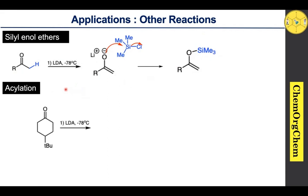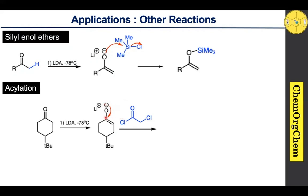Another interesting application of LDA is the acylation reaction. A ketone treated with LDA under minus 78 degrees Celsius generates the corresponding enolate ion, which then reacts with chloroacetyl chloride. The O-negative charge moves toward the carbon atom, attacking the electrophilic carbonyl carbon, the electrons move toward the oxygen, and the chlorine atom is kicked off, yielding the corresponding acylated product.